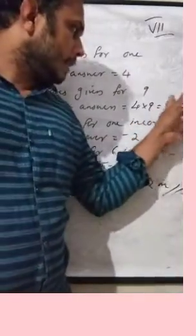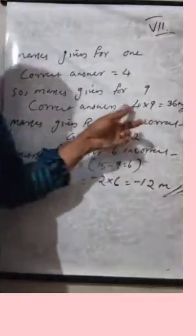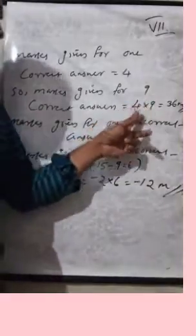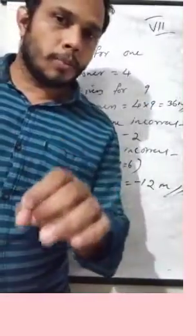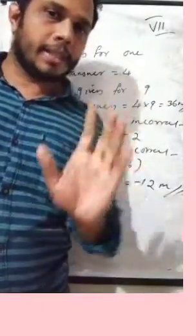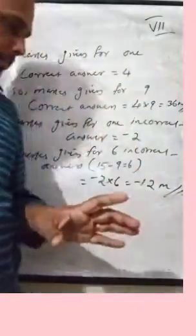Total, 36 marks are there for 9 correct questions. How many correct answers are there? 9 correct answers give 36 marks.